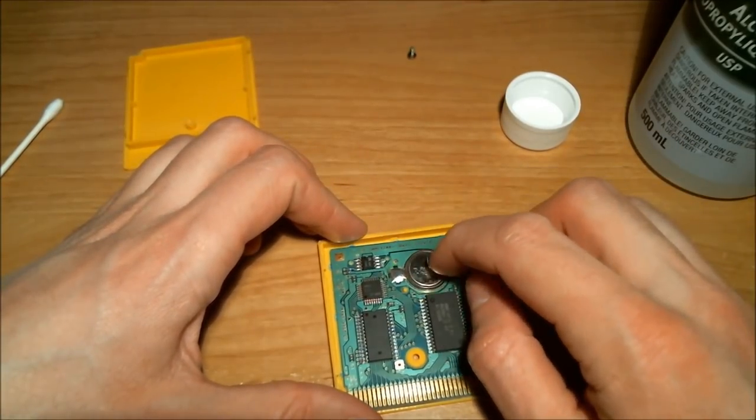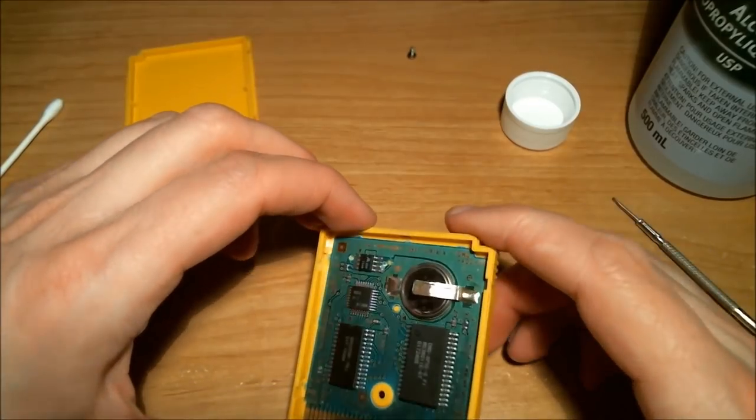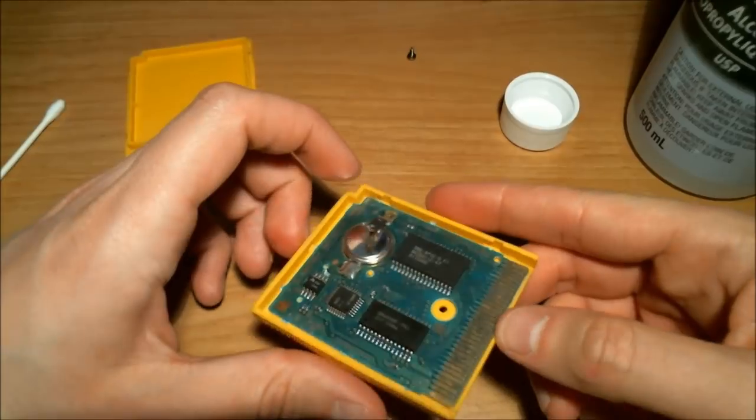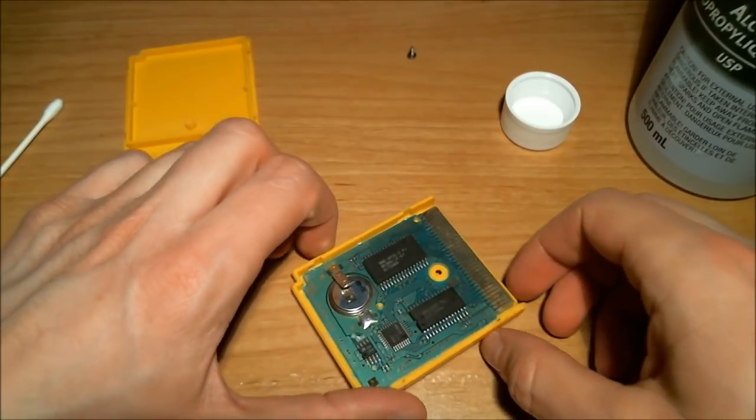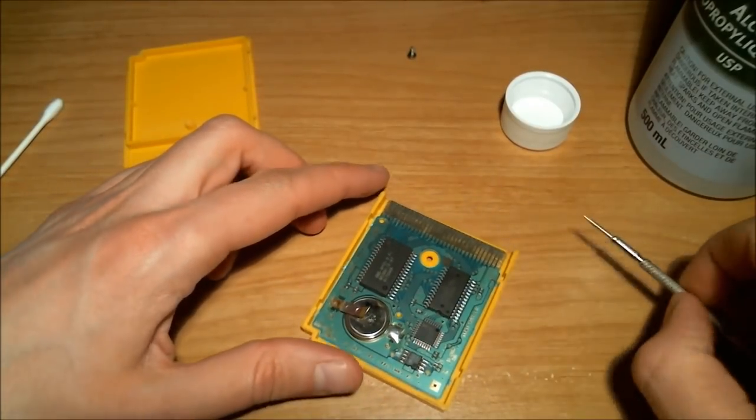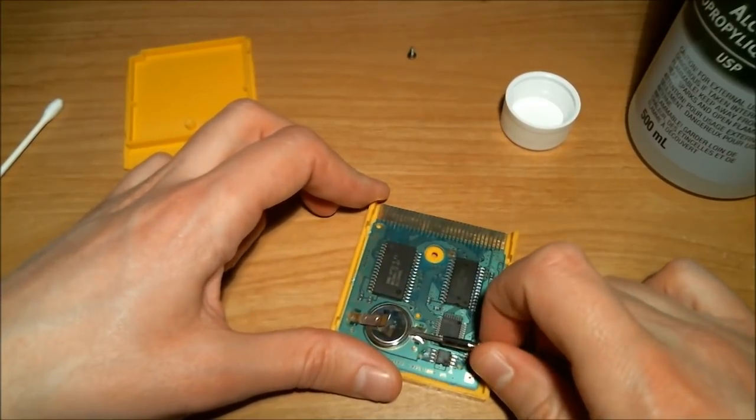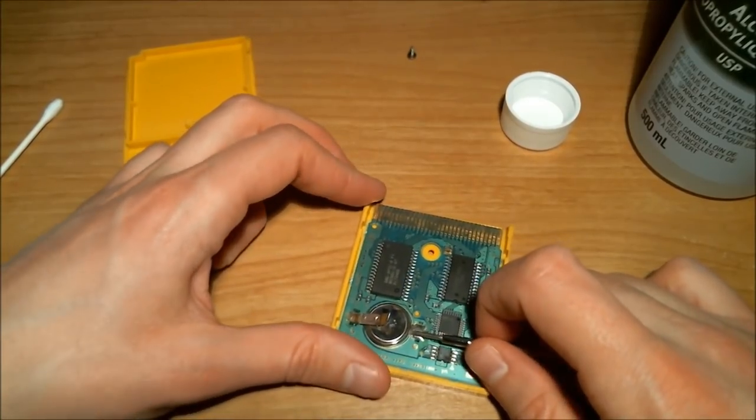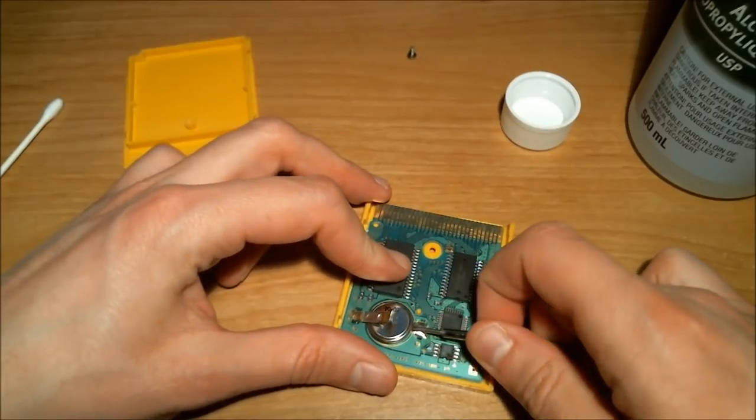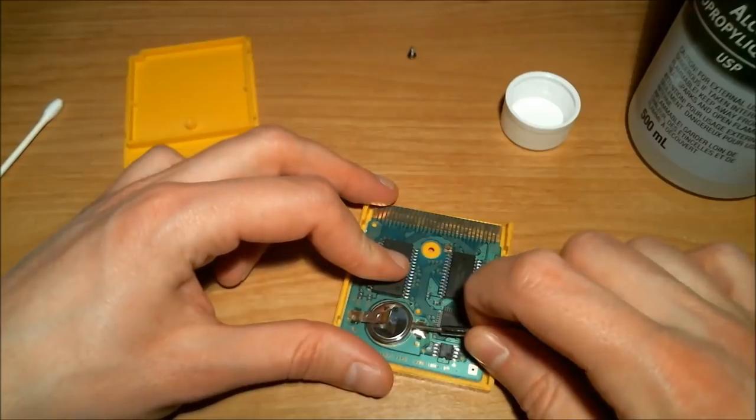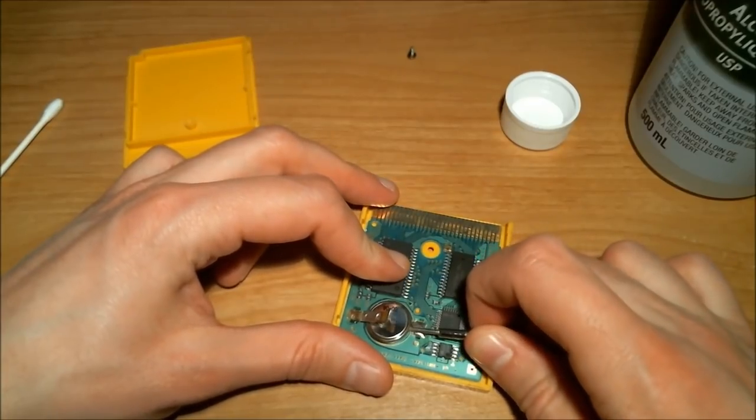So that tab is still intact, that top tab. So now we have to try and dig around underneath the battery and remove those tabs on the underside. Let's see what we can manage here.